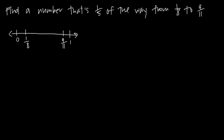Now we're interested in a number that's 1 fifth of the way from 1 eighth to 9 elevenths. If we take the section between 1 eighth and 9 elevenths and divide it into five pieces, we draw four lines in between, giving us 5 sections. Then 1 fifth of the way from 1 eighth to 9 elevenths is right at the end of the first section — that's the point we're interested in finding.